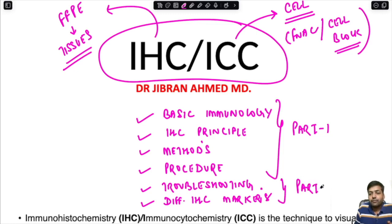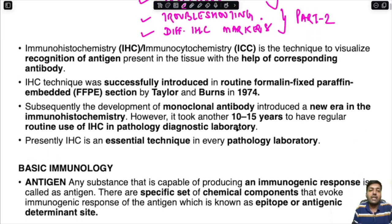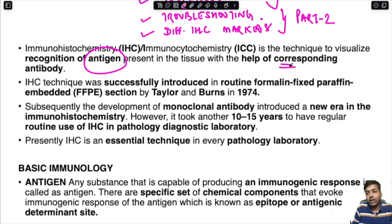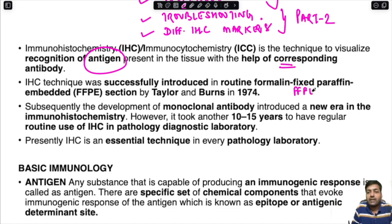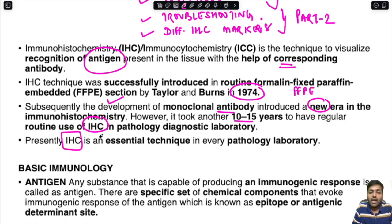IHC or immunohistochemistry is a technique to visualize the recognition of an antigen present in tissue with the help of a corresponding antibody. IHC was successfully introduced into routine formalin-fixed paraffin-embedded tissue sections by Taylor and Burns in 1974. Subsequently, the development of monoclonal antibodies introduced a new era in immunohistochemistry, though it took another 10 to 15 years before IHC became routinely used in diagnostic pathology laboratories.